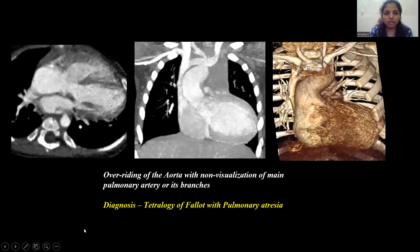The following axial and sagittal contrast-enhanced CT images show overriding of the aorta with non-visualization of the main pulmonary artery or its branches. This was a case of tetralogy of Fallot with pulmonary atresia.